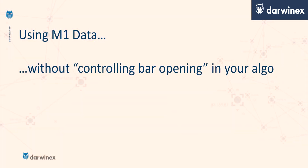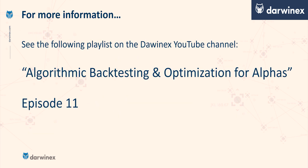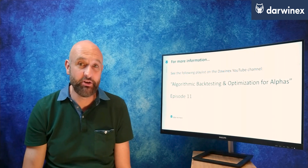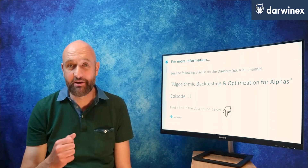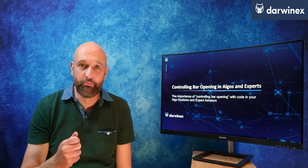What I have learned from bitter experience in the past is that if you do use M1 data but you don't control bar opening in your code, then the backtesting process is basically useless at providing an indication of how well your system will perform when you put it live. However, when you do control bar opening, the similarity between backtest results and live trading results can be incredibly close. If you want more information about why this is the case, I talk about this in a lot more detail in episode 11 of my backtesting video series. I've put a link to episode 11 in the description right below.